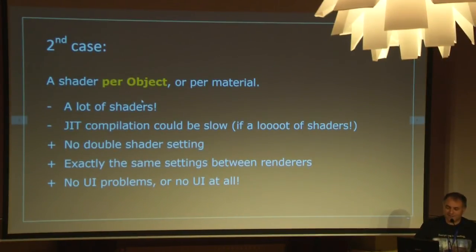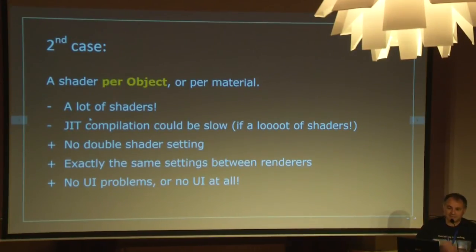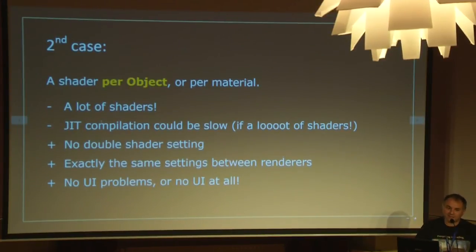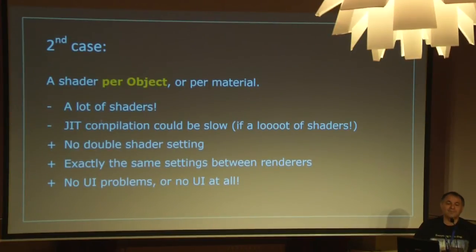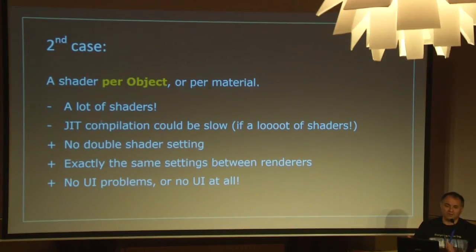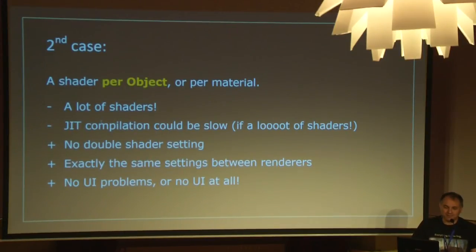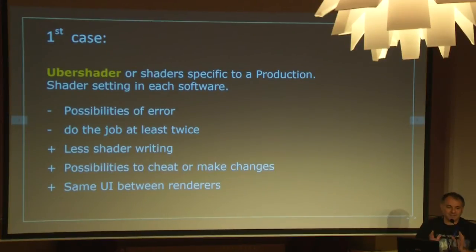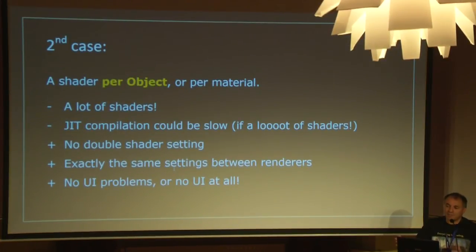What could be the problem? A lot of shading development — I have to make all the job. And a just-in-time compilation: you know OSL is just-in-time compilation. If you have 1,000 or 10,000 shaders, it can start to be slow — you can have 3 to 5 minutes of just-in-time compilation for 10,000 shaders. But when you have 10,000 shaders in one scene, surely you are not worried about 1 or 2 minutes more. One very big default also: it closes every possibility to cheat. If your blue is too blue because of color profile or anything, you can't change it. So I'm using a mix of the two: some objects are overshaded, some others have very specific settings.